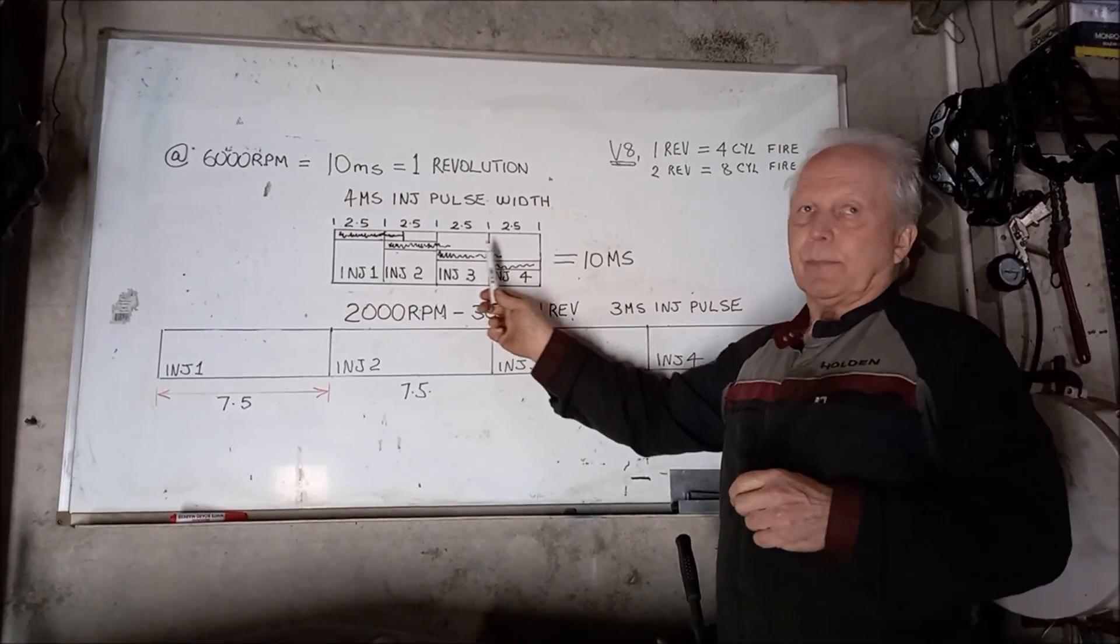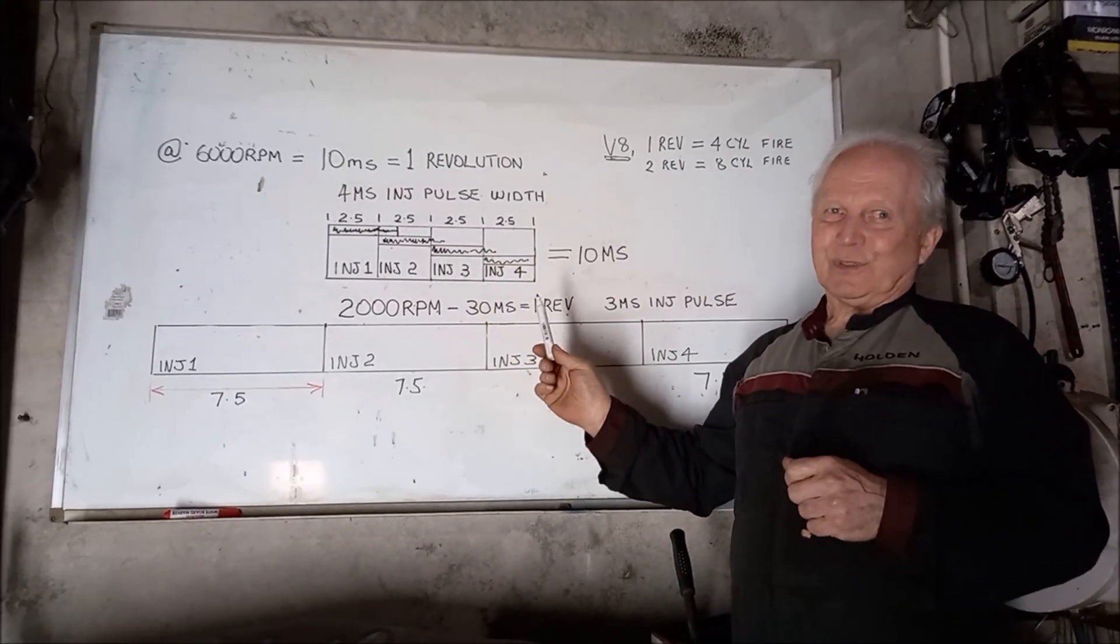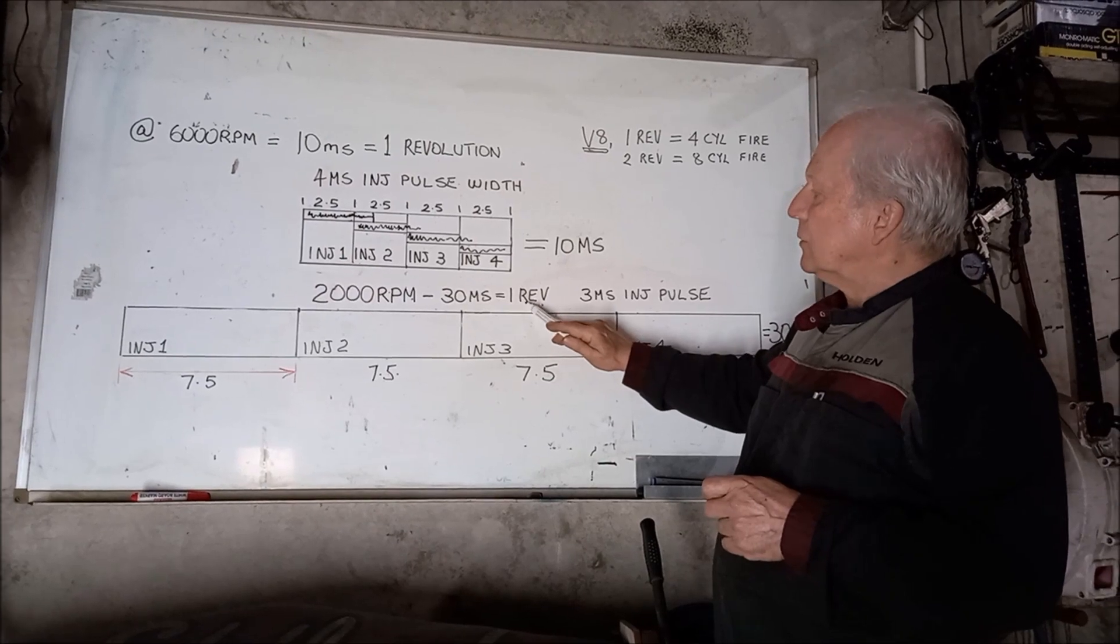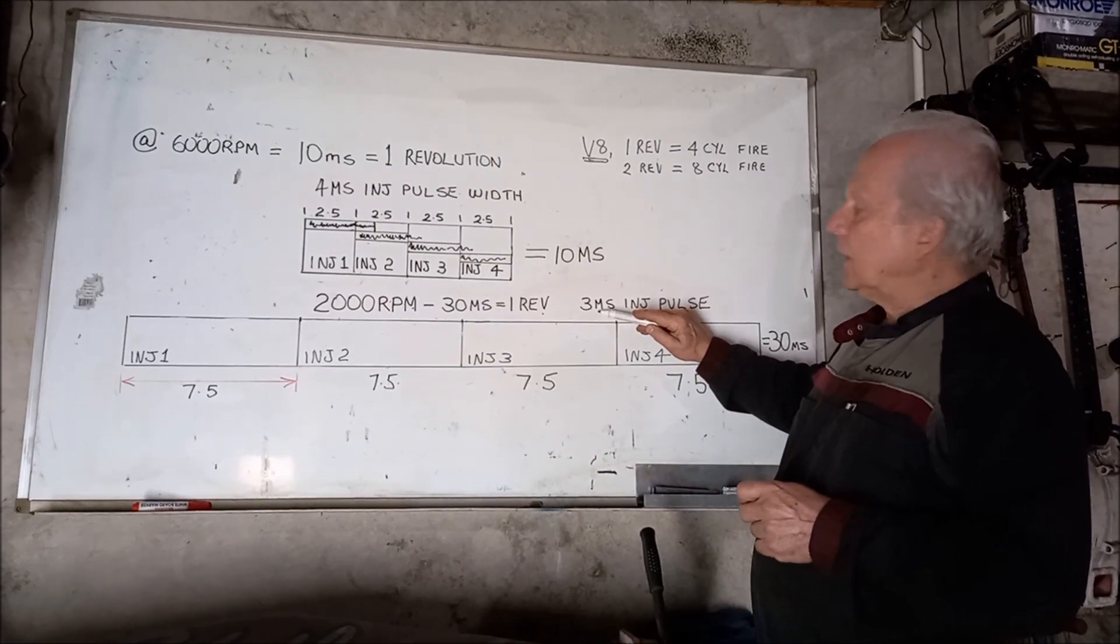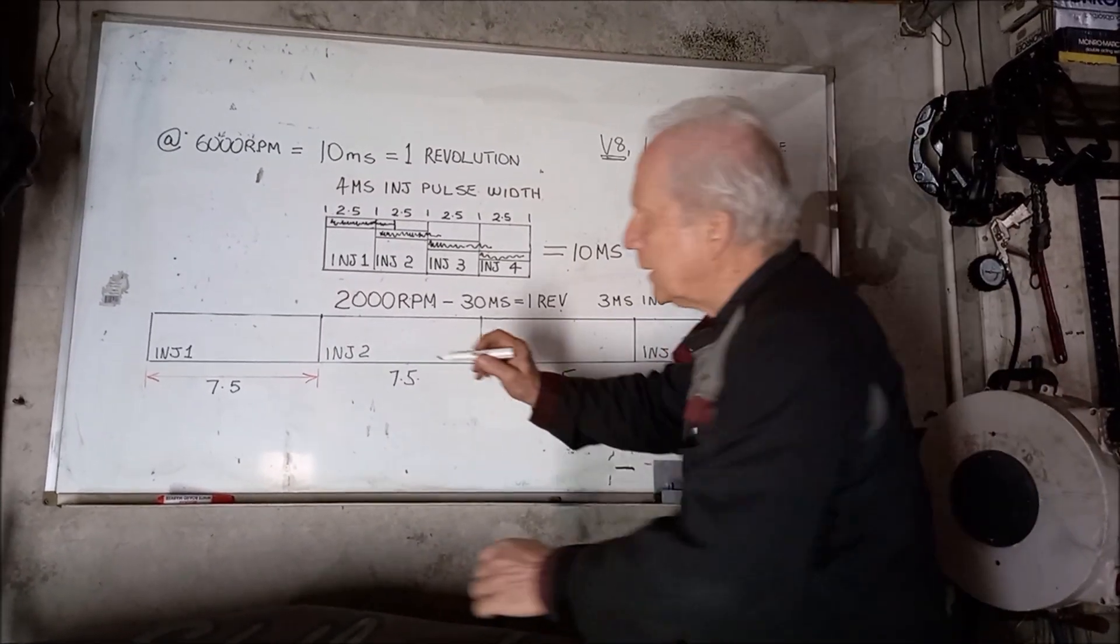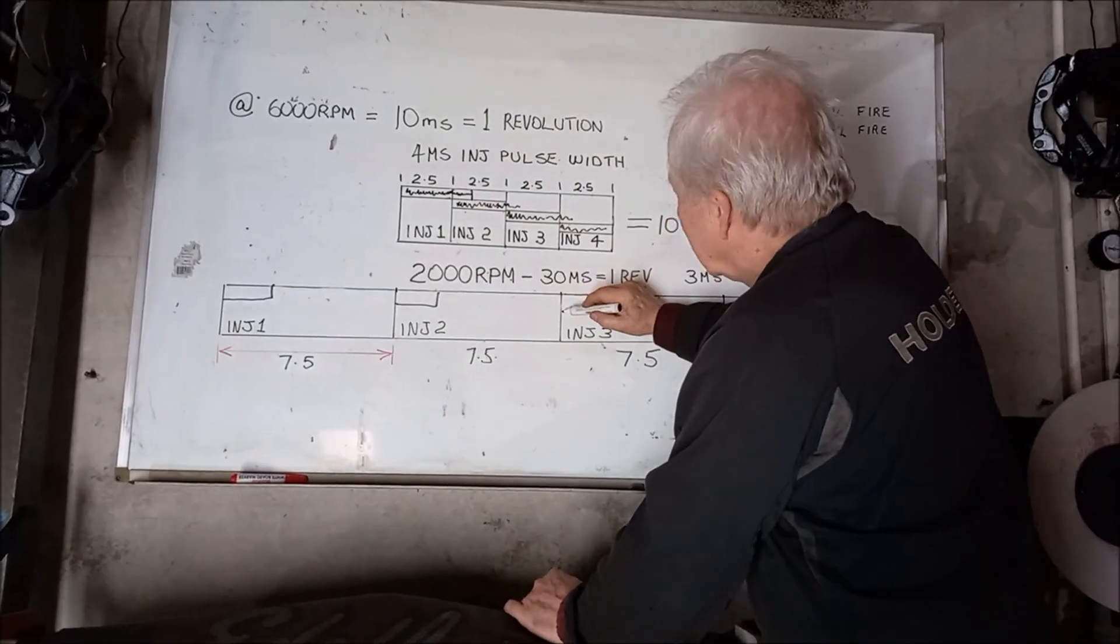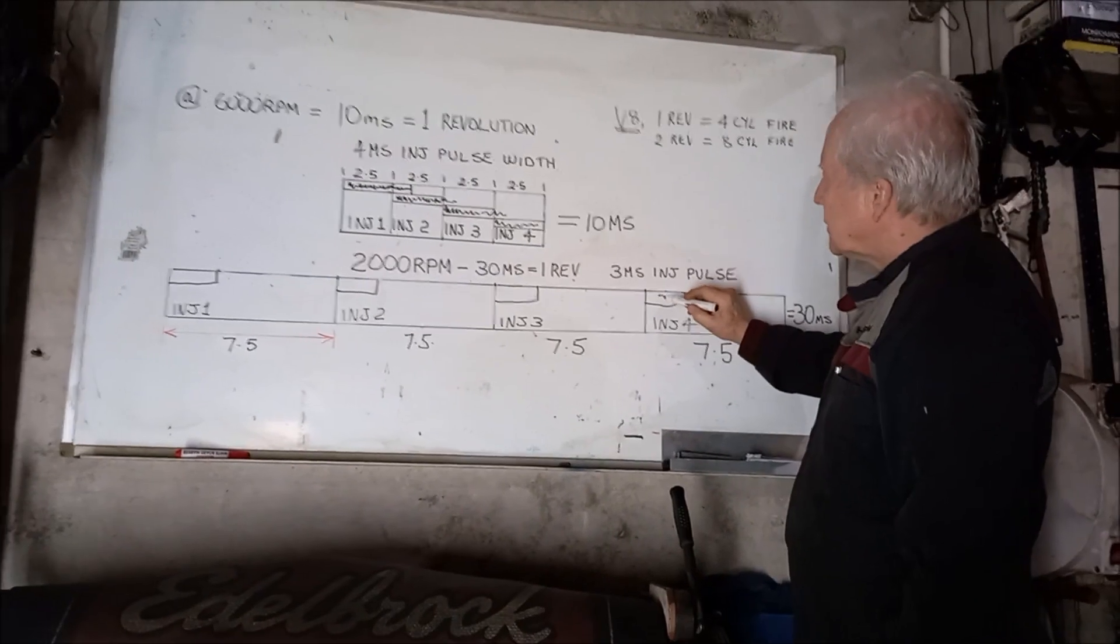So that's at 6000 rpm which I think explains why once we got the revs up the car ran really well, because we had an uninterrupted fuel flow. But it all gets different at 2000 rpm. So 2000 rpm, three times as long, we've got 30 milliseconds for the engine to do one revolution. We also had about a three millisecond injector pulse.